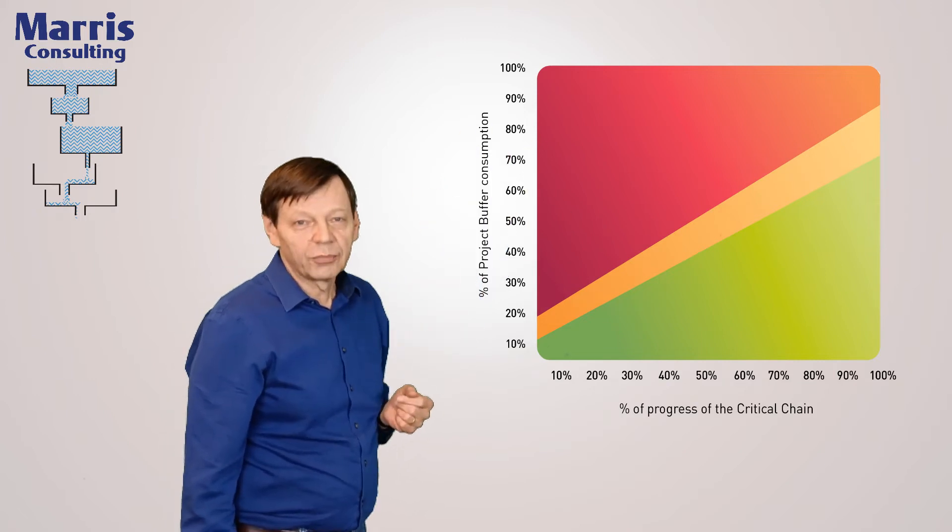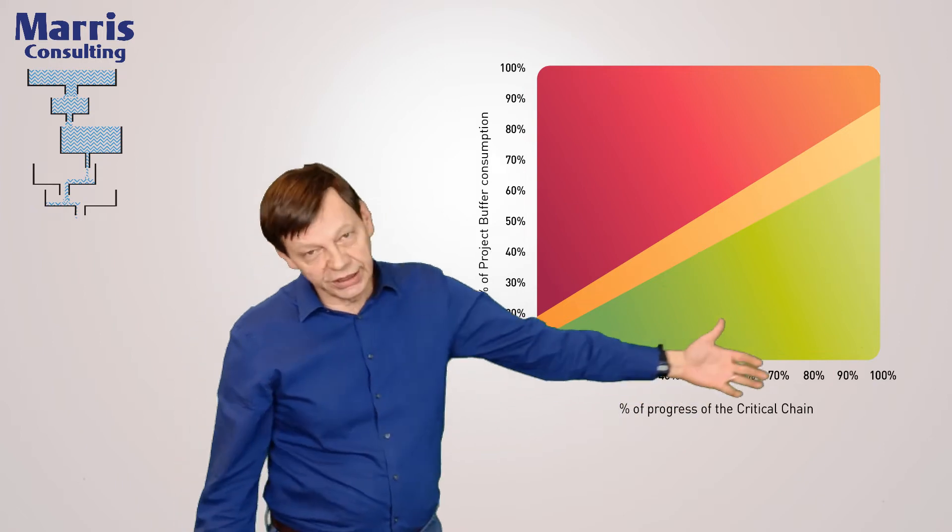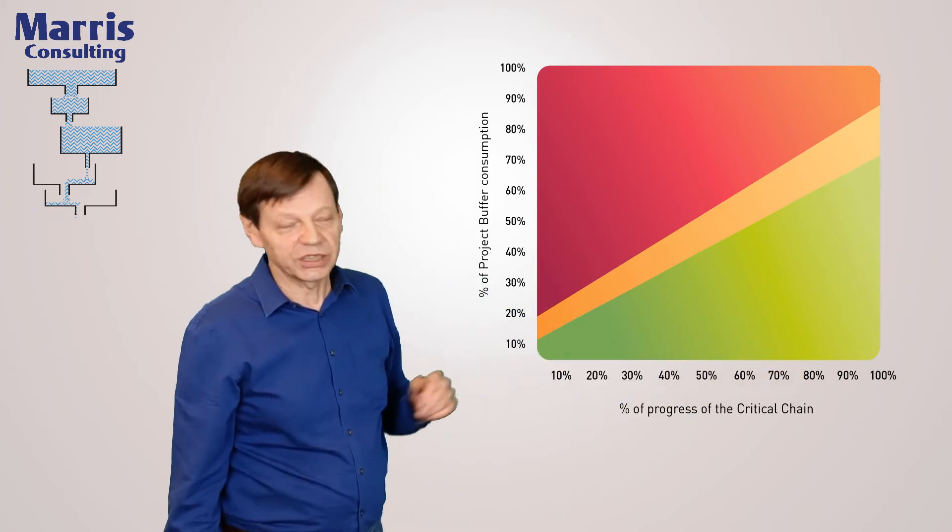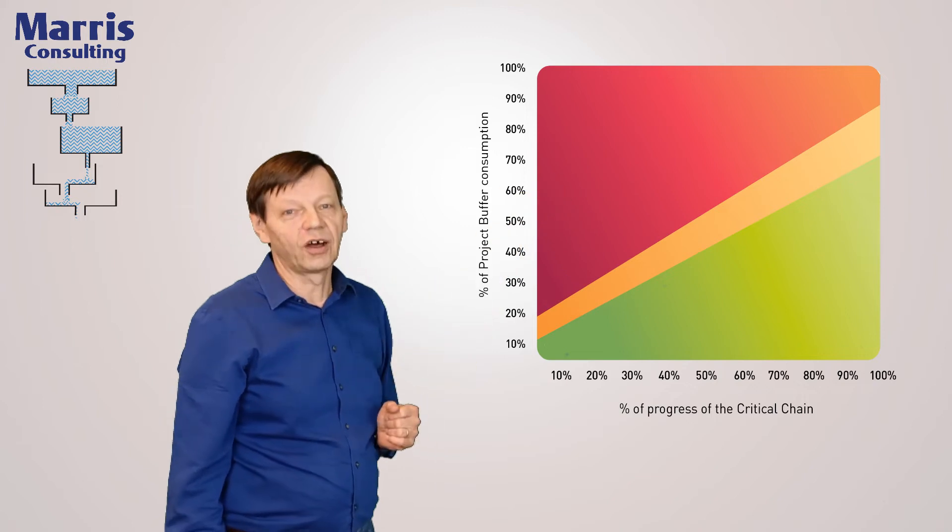So for instance in a product development you might have two years of focused or optimistic duration and a whole year of a buffer.